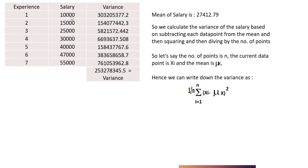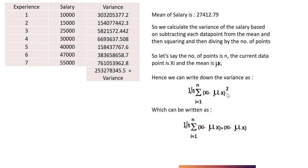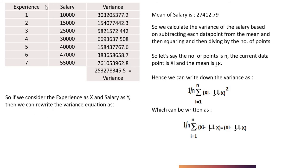So x of i, as we have already discussed, will be 10,000, then 15,000, 25,000 and so on. Mu of x is 27,412.7. Based on this formula, we can rewrite it: (x_i minus mu_x) squared can be written as (x_i minus mu_x) into (x_i minus mu_x). Now let's say we have experience as x and salary as y — so we can rewrite this formula as (x_i minus mu_x) into (x_i minus mu_x).